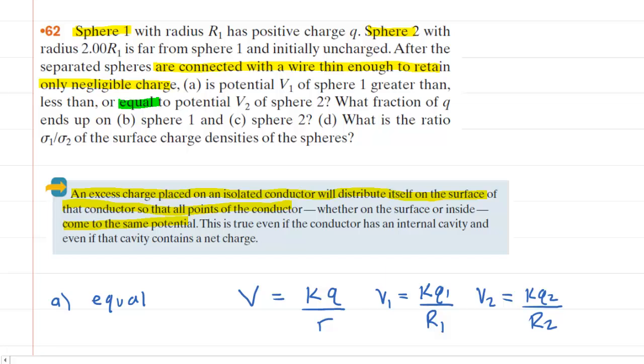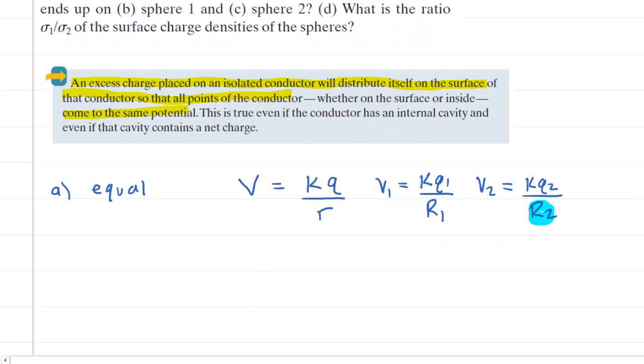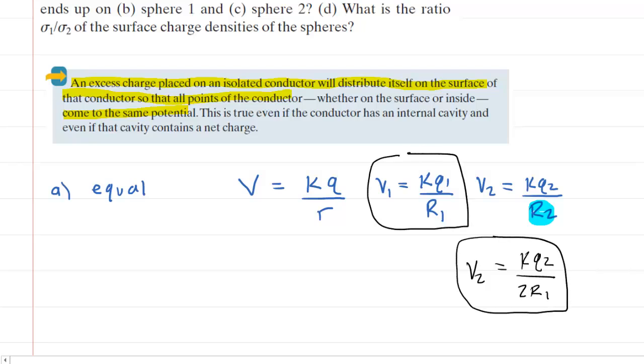Now, we also know that sphere two's radius was represented as 2R1. So in fact, this radius right here for sphere two can be substituted with 2R1. So we'll make that substitution. So here's an equation that we're going to be using for sphere two, and this is the equation we're going to be using for sphere one.